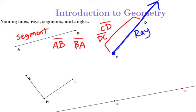The order matters. The first letter has to be the point that's the beginning endpoint, and then the second letter is where the ray is heading towards. So you would name this ray CD. You couldn't name it DC because it doesn't start heading towards C — it starts at C and goes towards D. So that's ray CD.